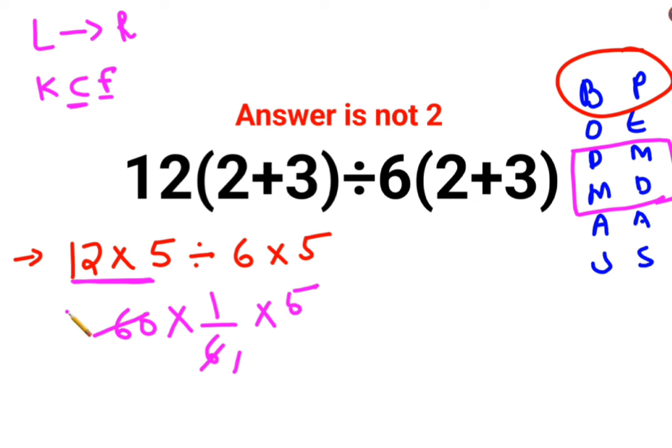This is 60 times 1 over 6. So now you are left with what? 10 into 5. Answer comes out to be 50.